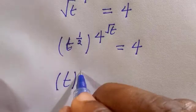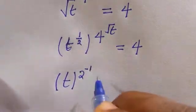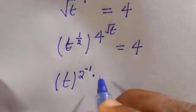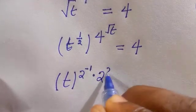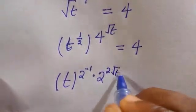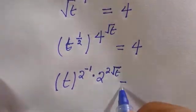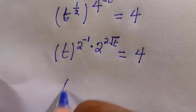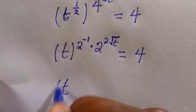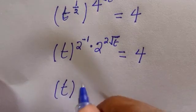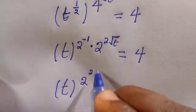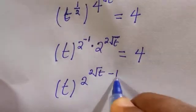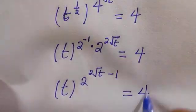Then I can still change it to 2 to the power of minus 1, which is still half, times 4 to the power of root t, which is also 2 to the power of root t, equals 4. And they have the same base and different power, so we add these together, which becomes 2 to the power of root t minus 1 equals 4.